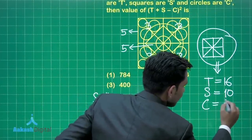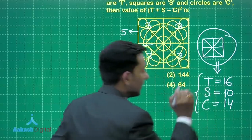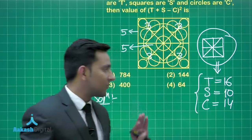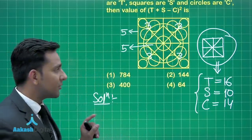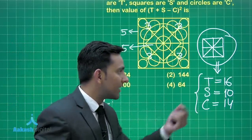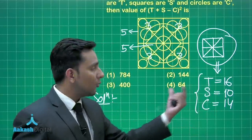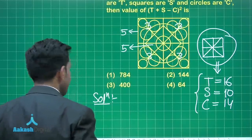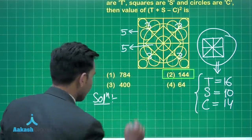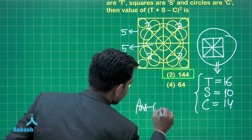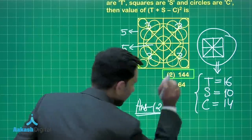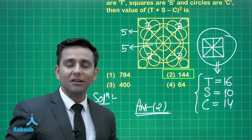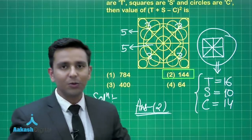So the number of circles is 14. After finding the number of triangles, number of squares, and number of circles, we can find the value of the given expression T plus S minus C whole square. That means 16 plus 10 is 26, and 26 minus 14 gives us 12. That means we have to find 12 squared. So the correct answer for this question is option number 2. I hope you understood this question based on the concepts of diagrammatic puzzle. Now let's move forward to the next question.